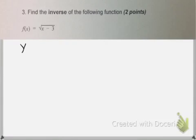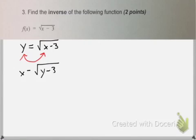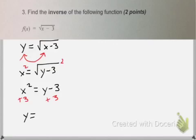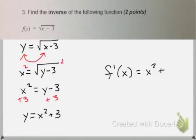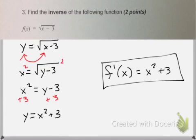Number 3 asks us to find the inverse. We know that when finding the inverse, all you have to do is switch your x and y values. We always like our equations to say y equals, so we have to solve for y. I'm going to square both sides, so I get x squared equals y minus 3. Now I can add 3 to both sides. This is my inverse, and the way you write an inverse is like this.